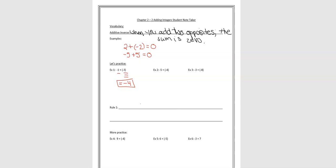Over here, example 2, I have 5 negatives — 1, 2, 3, 4, 5 — and I'm going to add 4 more negatives: 1, 2, 3, 4. How many do I have altogether? Well, I have 5 here plus 4. That's going to be a total of 9 negatives.